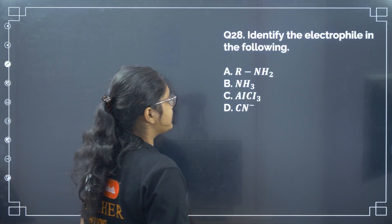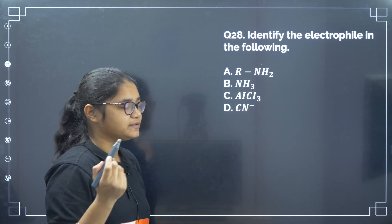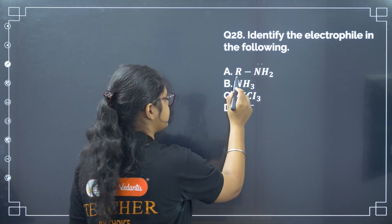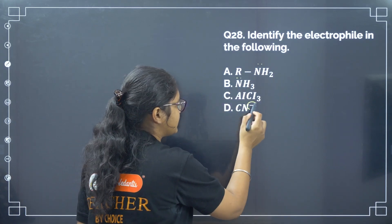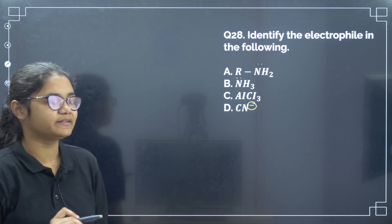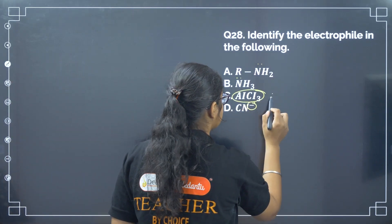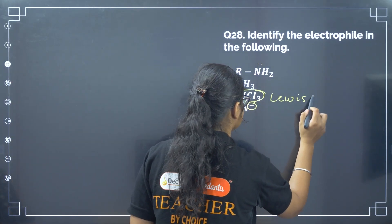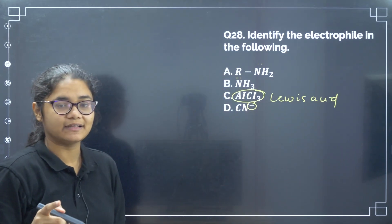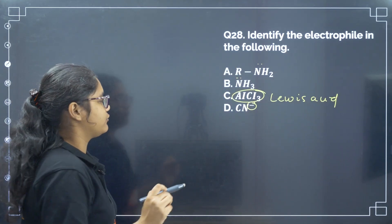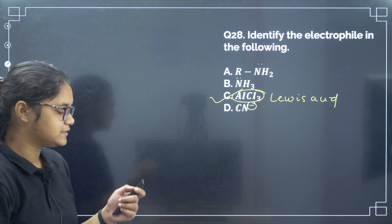Next: identify the electrophile among the following. Species with lone pairs behave as nucleophiles. A negative charge also makes a nucleophile. AlCl3 is a Lewis acid — it is electron deficient and will behave as an electrophile. Correct answer is option number C.